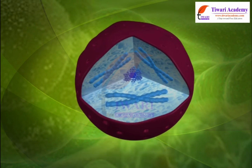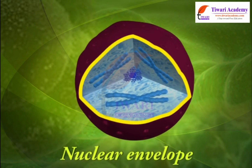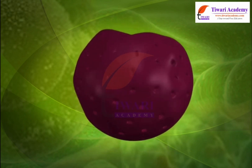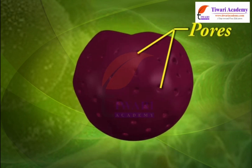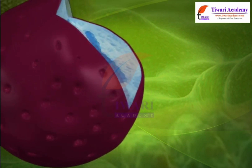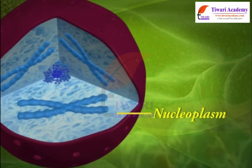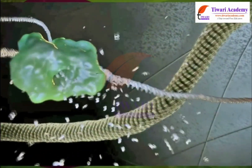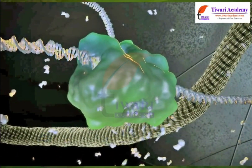The nucleus is surrounded by a double membrane called the nuclear envelope. The nuclear envelope has pores that link the cytoplasm to the inside of the nucleus. Within the nucleus is a substance called nucleoplasm. The nucleus also contains the nucleolus and chromosomes, and its primary function is to control the activities that occur within the cell.